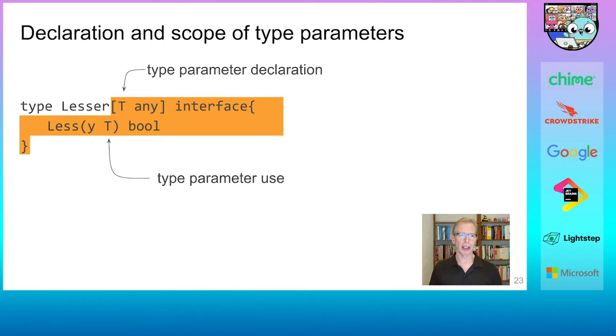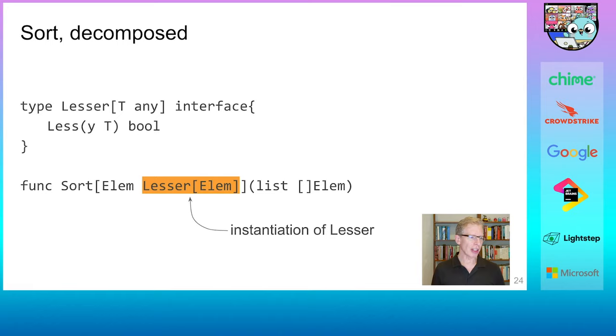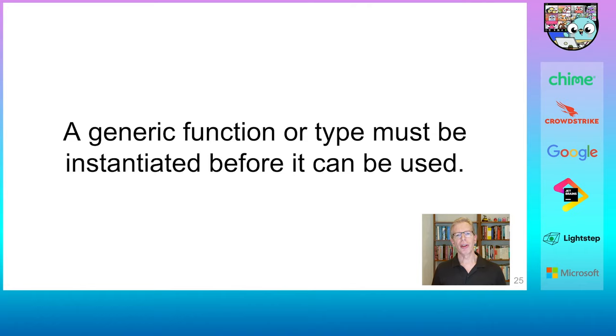For functions, the scope of type parameters extends from the opening square bracket to the end of the type. And that's of course the whole point of type parameters, because we want to be able to parameterize the type anywhere in its specification. So given this lesser interface, our sort can now be written with an explicitly named lesser constraint. To make this work, the generic lesser type must be instantiated with a type. In general, we can't do anything with generic objects without instantiating them. Every generic function and type must be instantiated before it can be used. And this is true even if the instantiation happens with another type parameter as opposed to a concrete type, as in the previous example.